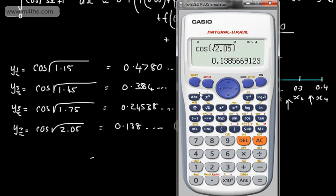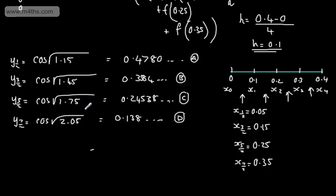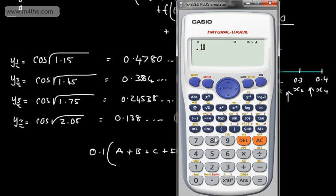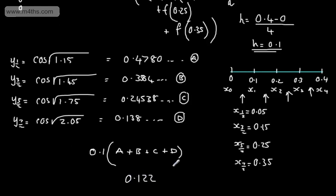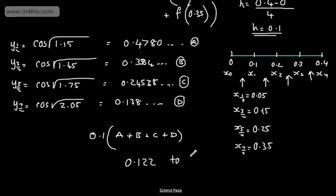All I need to do now is compute 0.1 × (A + B + C + D). Putting this through the calculator gives approximately 0.122. The answer to 3 significant figures is 0.122.